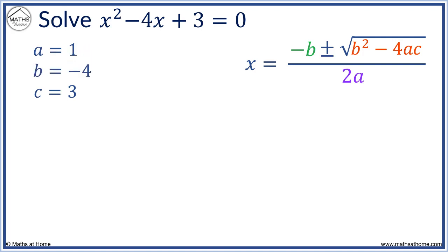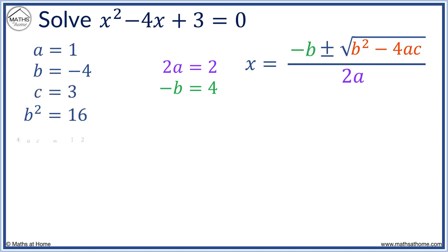If b equals minus 4, then minus b equals plus 4. If a equals 1, then 2a equals 2. b squared is always positive. If b equals minus 4, b squared equals 16, because minus 4 times minus 4 equals 16. 4ac means 4 times a times c, which is 4 times 1 times 3, which equals 12. Now we have b squared and 4ac. b squared minus 4ac equals 4.